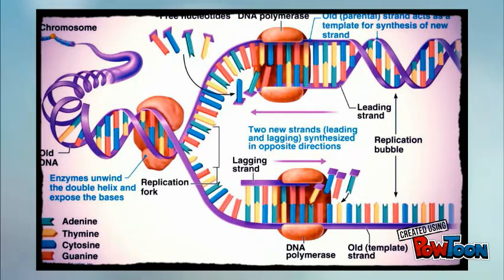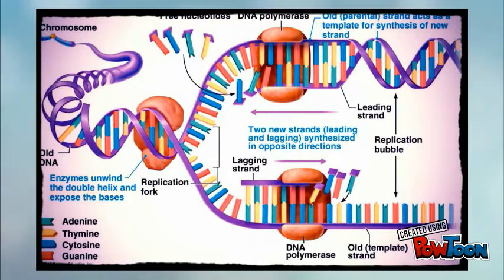In DNA, there is a process called DNA replication. This is how DNA copies itself. Every time DNA needs to copy, the enzyme helicase unzips the double helix.